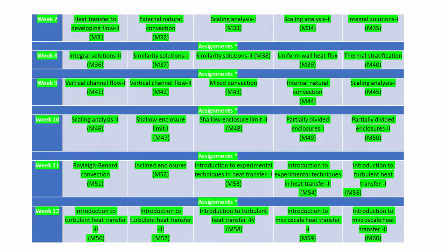We will also go on to natural convection, where we will look at scaling arguments, similarity solutions, integral solutions, thermal stratification, and mixed convection modes. Different types of enclosures in internal natural convection — such as shallow enclosures and partially divided enclosures — will be covered. We will also take a brief look at special cases like relevant convection, and we will do an introduction to experimental techniques — how modern-day experimentations are done to find parameters like Nusselt number and heat transfer coefficient.